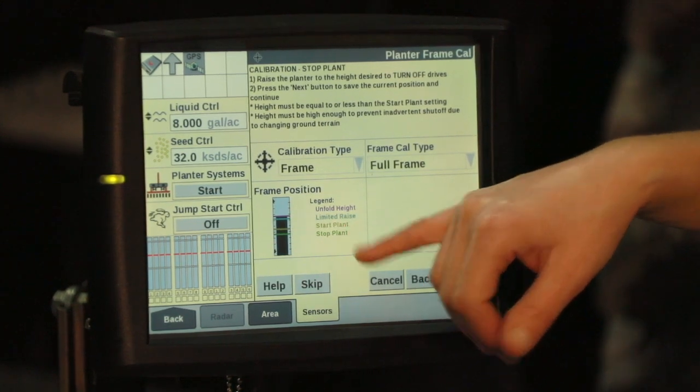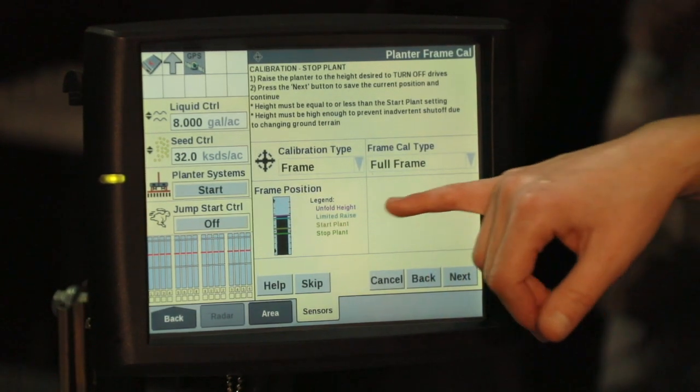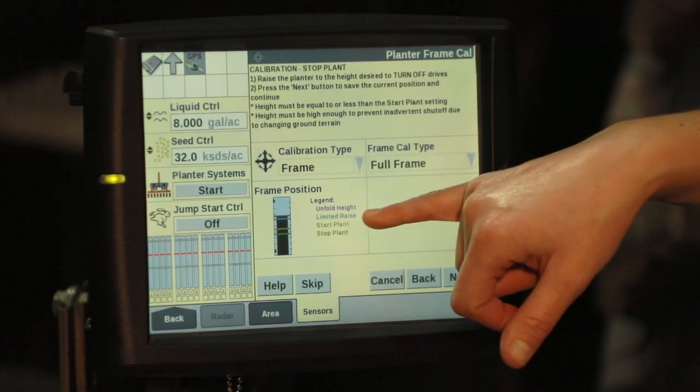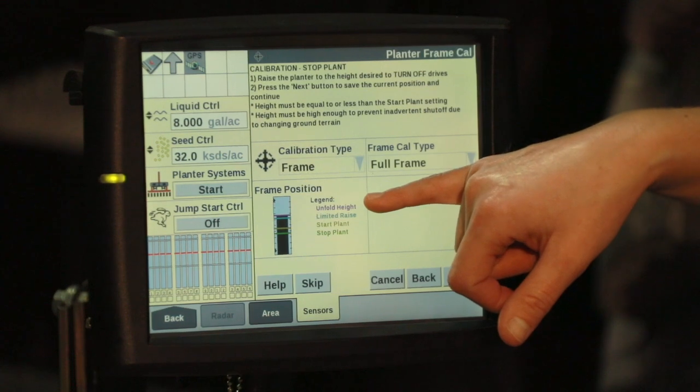Once we like where our toolbar is for our start plant height, we're going to click next and we're going to repeat the process for our limited raise and our unfold height.